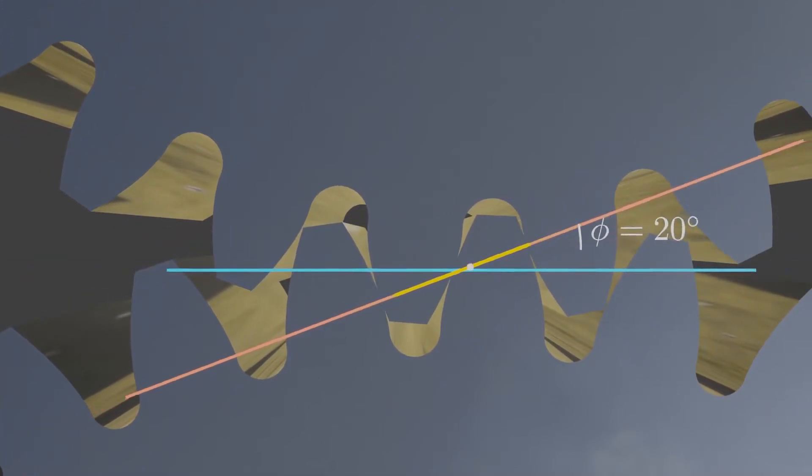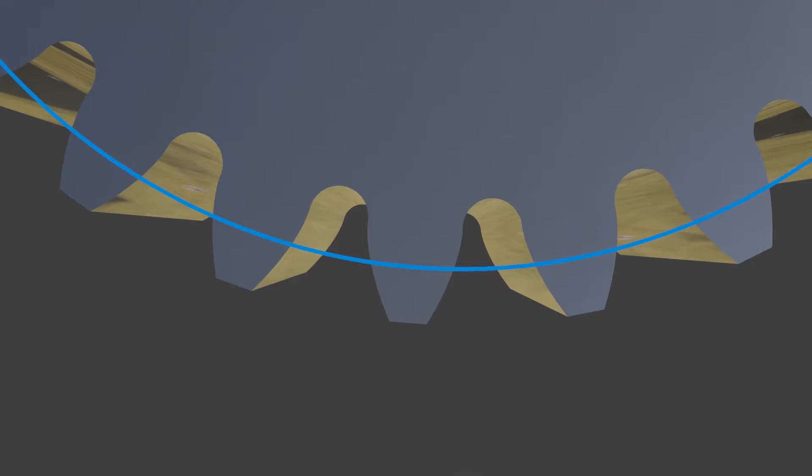The circular pitch, or simply the pitch, is the arc distance from a point on a tooth at the pitch circle to the corresponding point on the next adjacent tooth. The formula for circular pitch comes from dividing the circumference of the pitch circle of the gear into n parts, where n is the number of teeth.